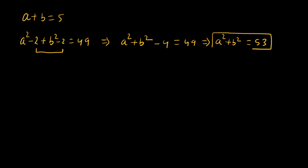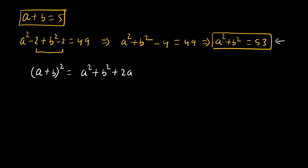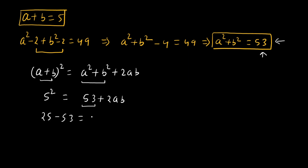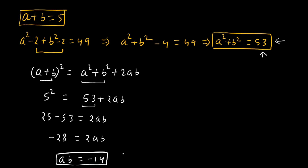We have a + b = 5 and a² + b² = 53. Applying (a + b)² = a² + b² + 2ab: 5² = 53 + 2ab, so 25 - 53 = 2ab, giving -28 = 2ab, therefore ab = -14.